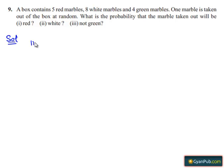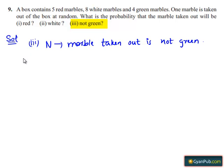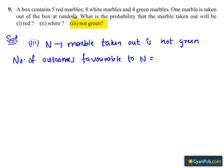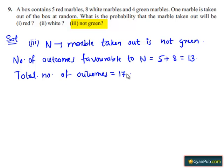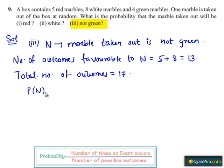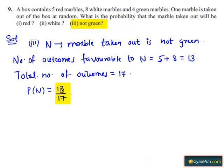Moving on to the third part. Let N be the event that the marble taken out is not green. Number of outcomes favorable to event N equals the number of red marbles plus the number of white marbles, which is five plus eight, which is nothing but 13. Total number of outcomes equals 17. Probability of event N equals 13 divided by 17. Therefore, the probability that the marble taken out will be not green is 13 divided by 17.